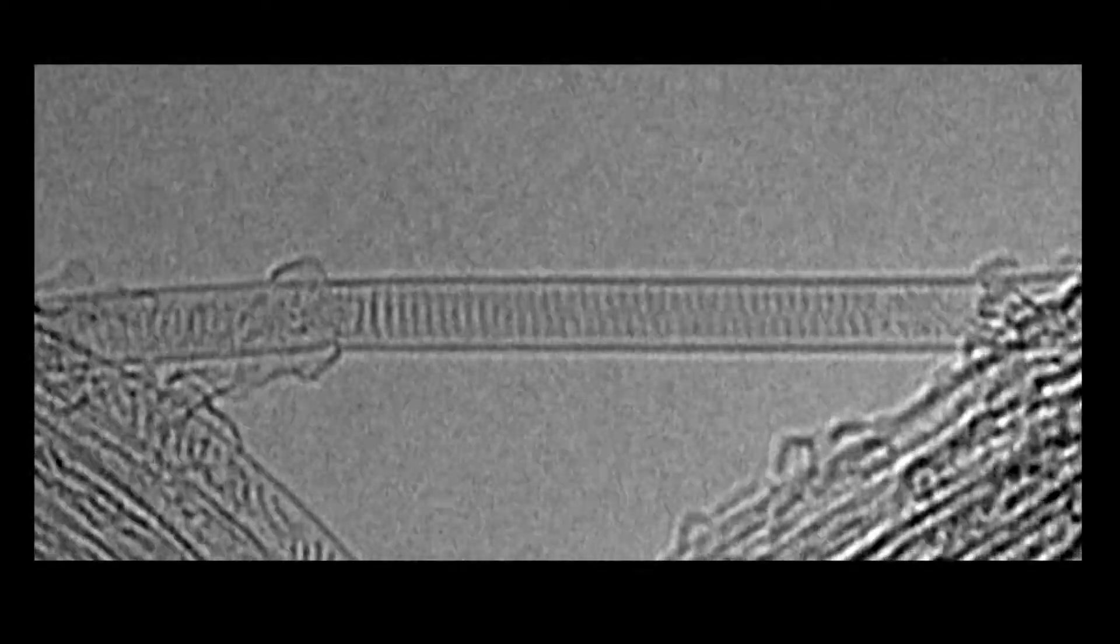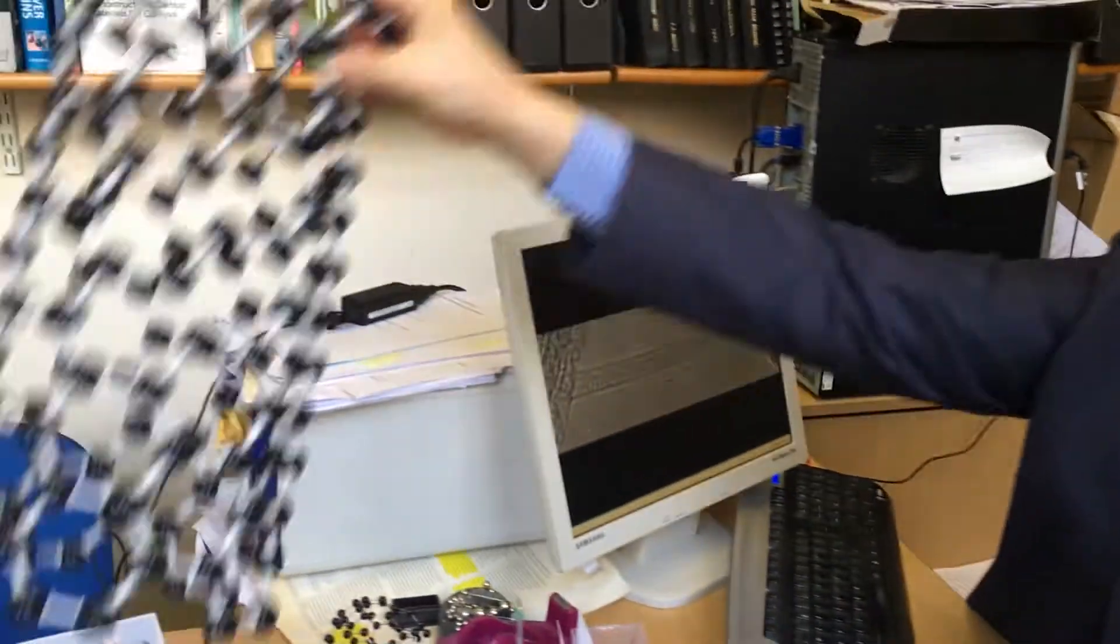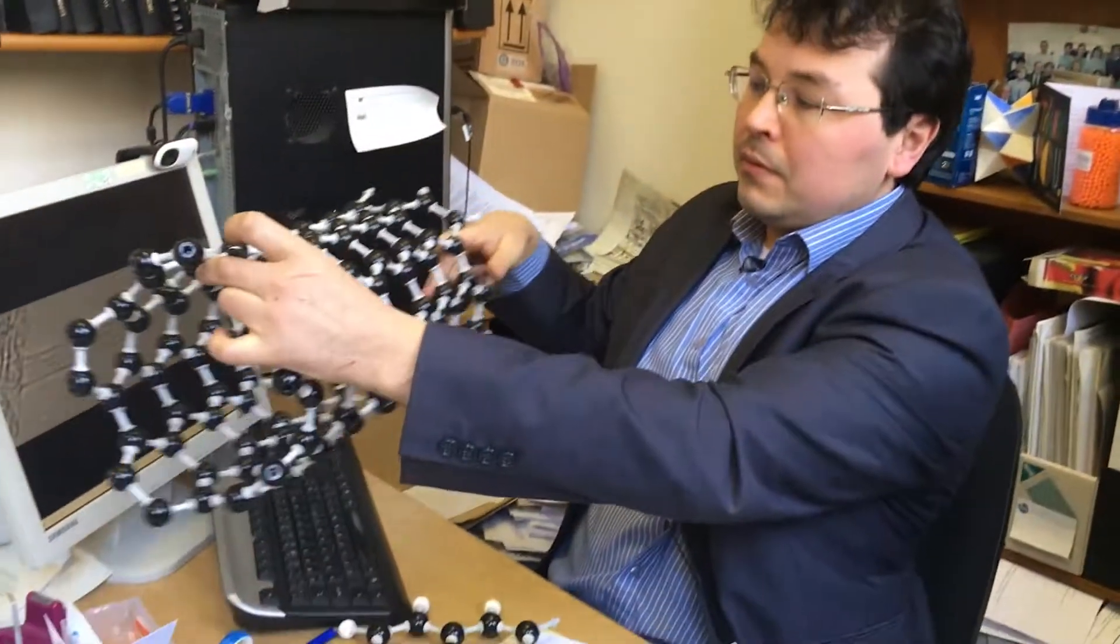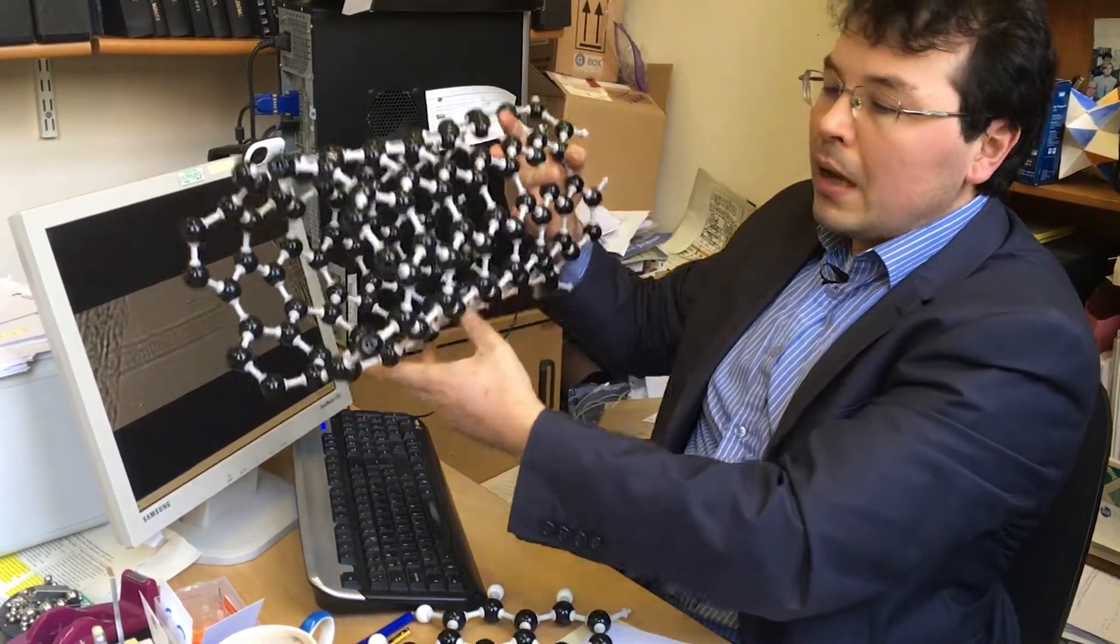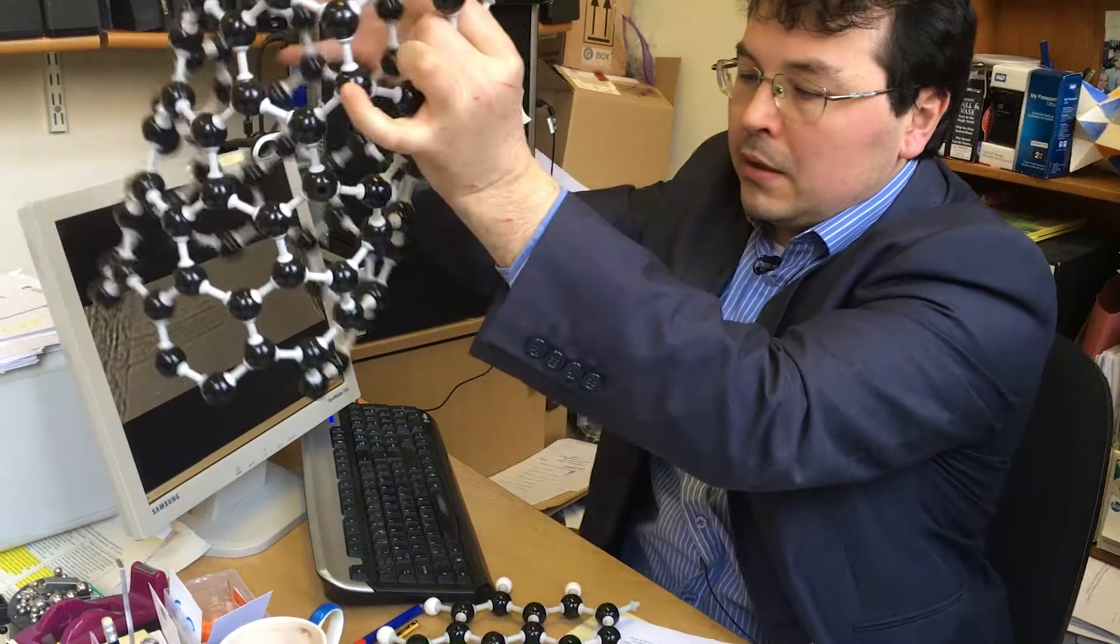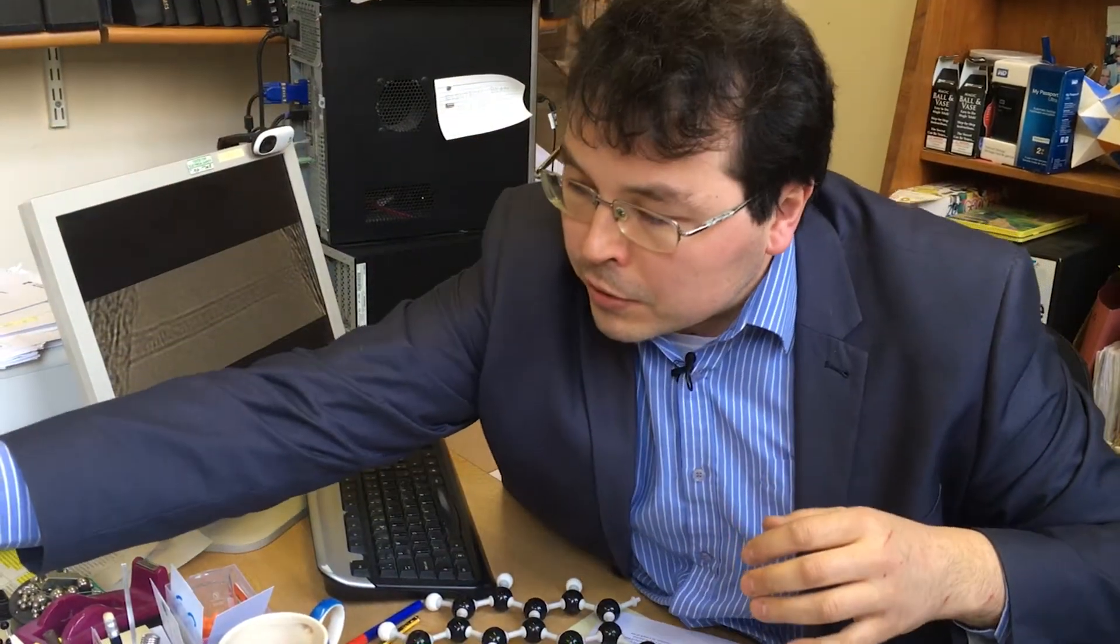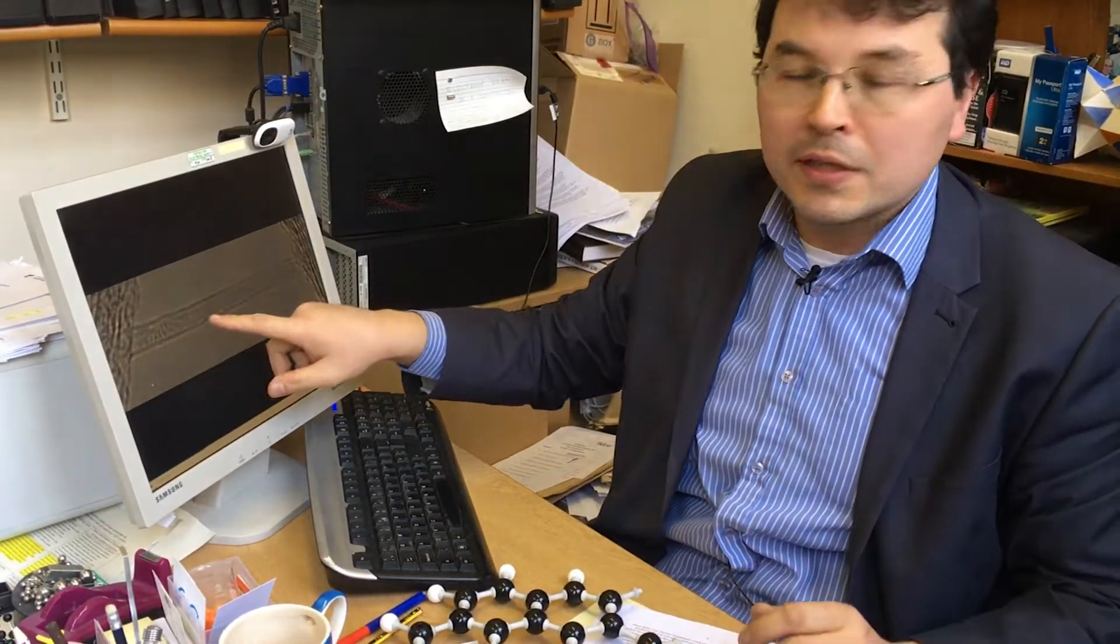What you see here on the screen is the world's smallest test tube, a carbon nanotube. It's essentially made out of a single layer of carbon, and what we're seeing here is two side walls of this nanotube as two parallel lines. On this electron microscopy image, you can see that the carbon nanotube is not empty, there is something inside.